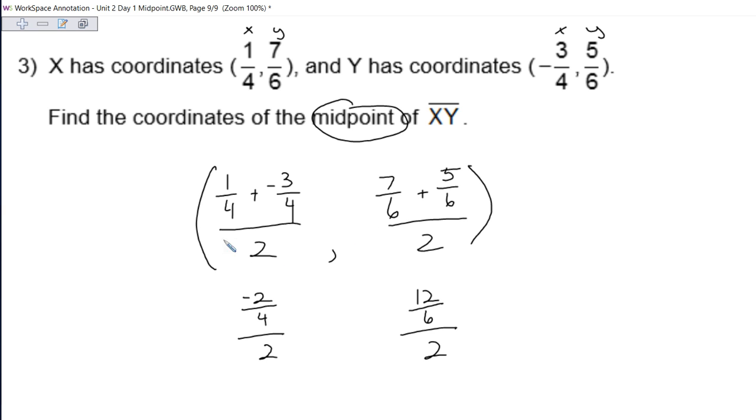So let's reduce our top fraction. Negative 2 divided by 4 is negative 1/2, still dividing by 2. 12 divided by 6 is 2, so 2 divided by 2. And then we need to keep reducing. So negative 1/2 divided by 2 is a negative 1/4. And 2 divided by 2 is 1. So negative 1/4, 1 is the coordinate of our midpoint.